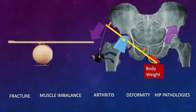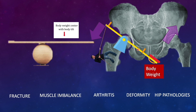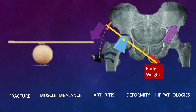The abductor lever arm is small while the body-weight lever arm is large, so a high abductor force is required to lift the body weight. If abductors are weak, the patient tilts the whole body towards the affected side, shortening the body-weight lever arm and reducing the required force. The longer lever arm requires less force compared to a shorter lever arm. This whole assembly — femoral head, acetabulum, abductor muscles, bone stock, and body weight — constitutes the abductor mechanism.